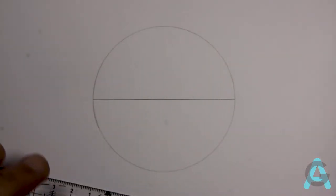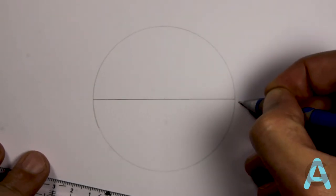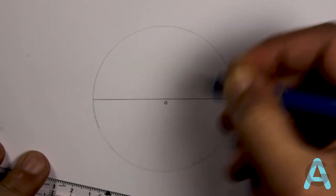To the right side of the diameter we'll call it one and to the center of the circle we'll call it O.